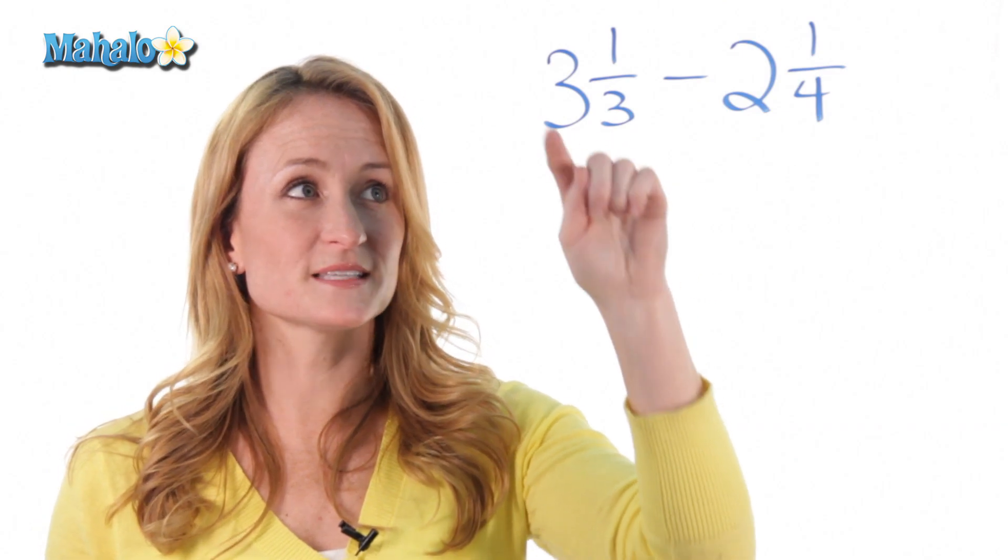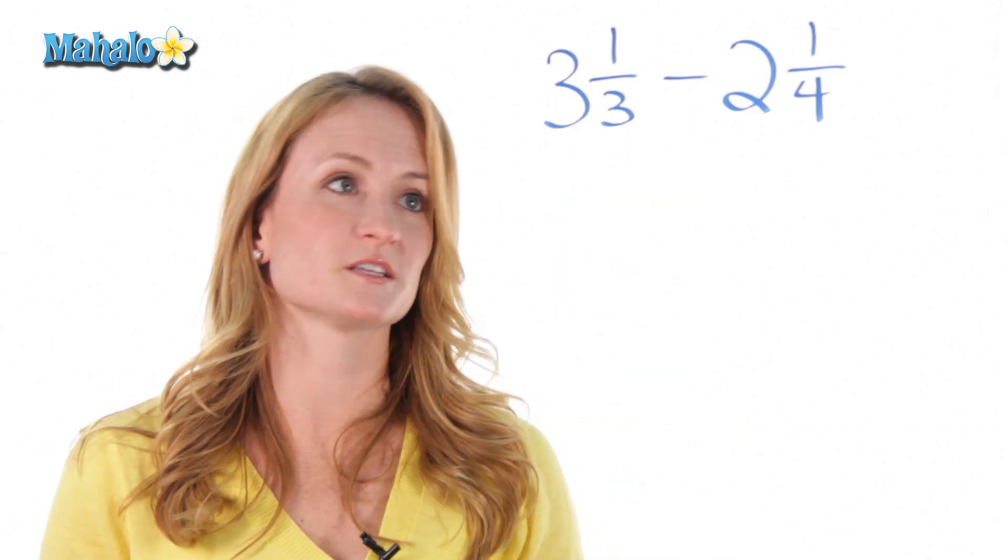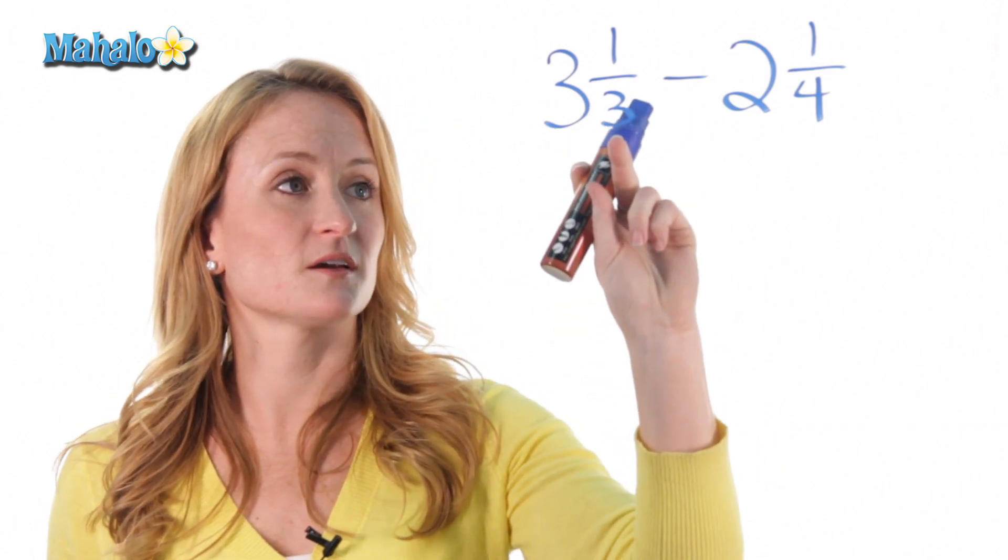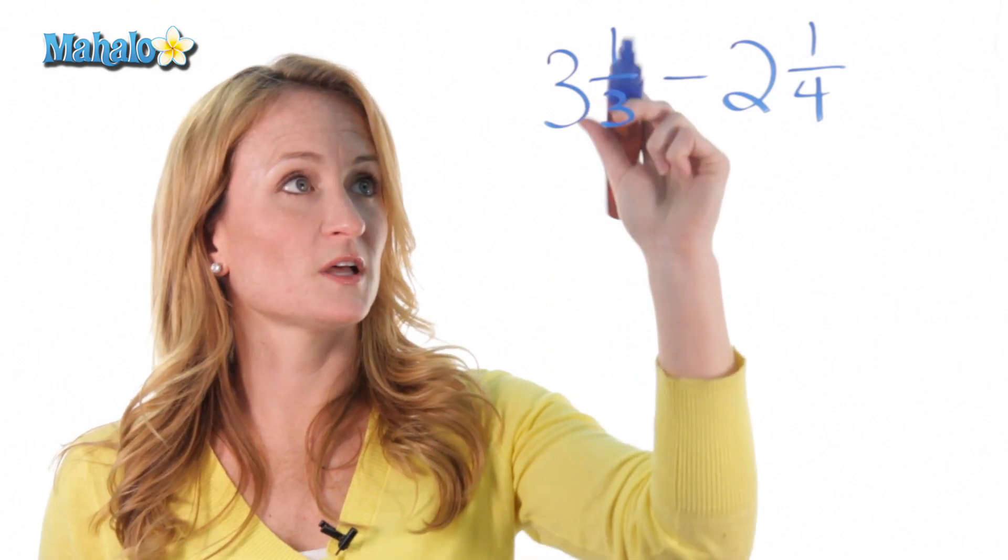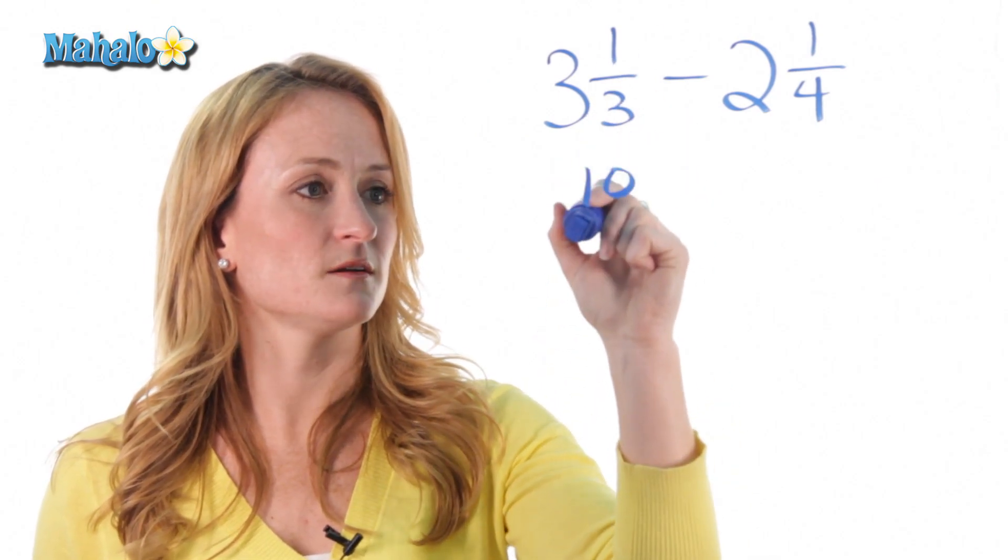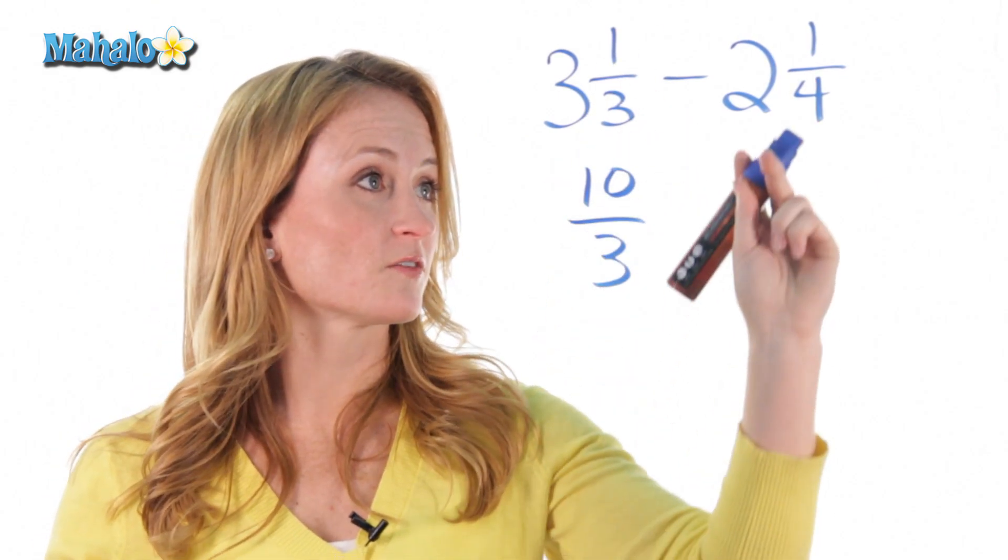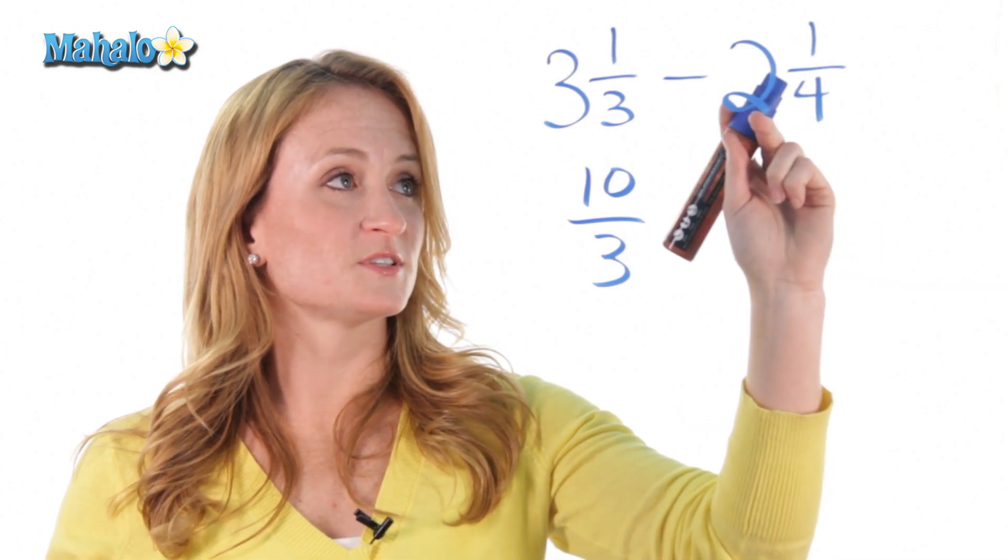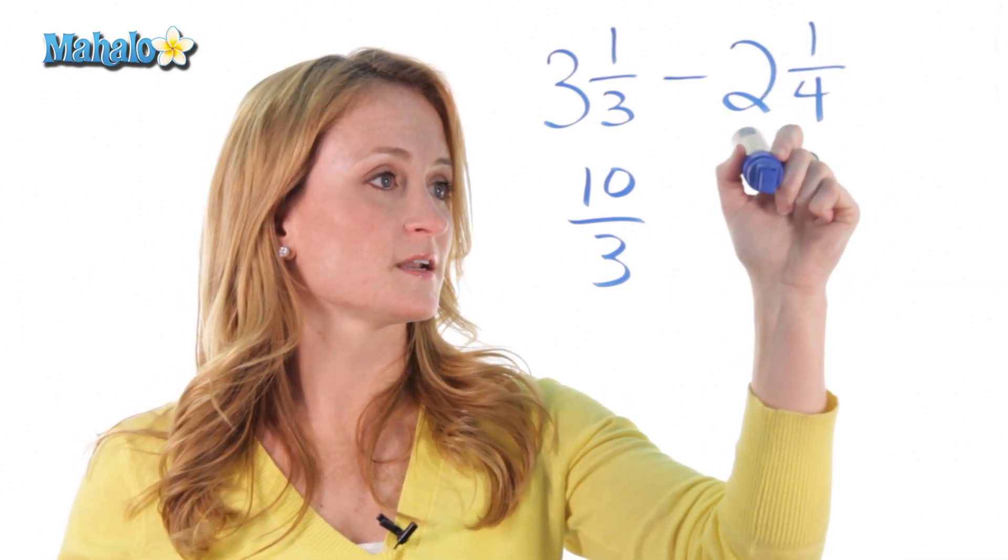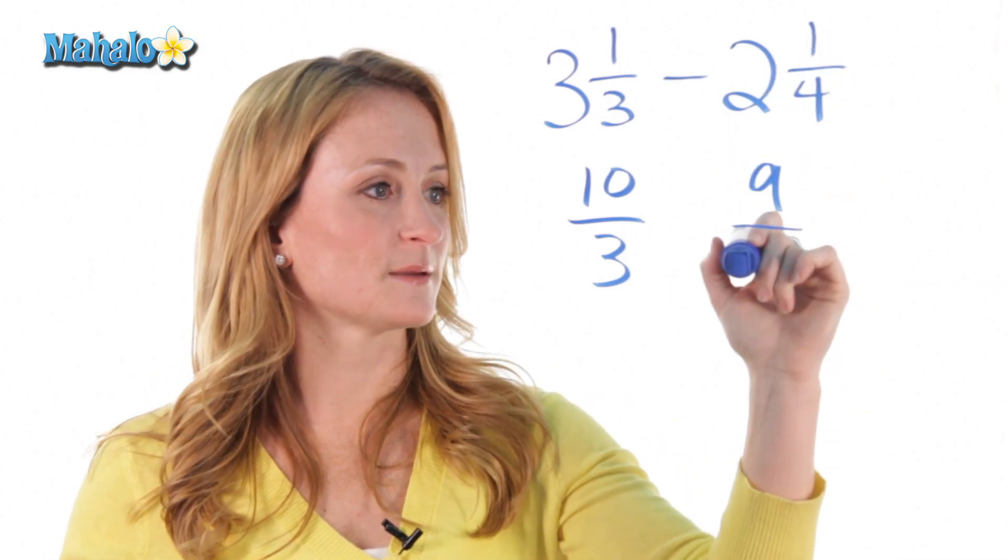First, we need to turn these mixed numbers into just fractions, and we know how to do that by saying 3 times 3 is 9, plus 1 is 10, over the same denominator. And over here, we have 4 times 2 is 8, plus 1 is 9, over the same denominator.